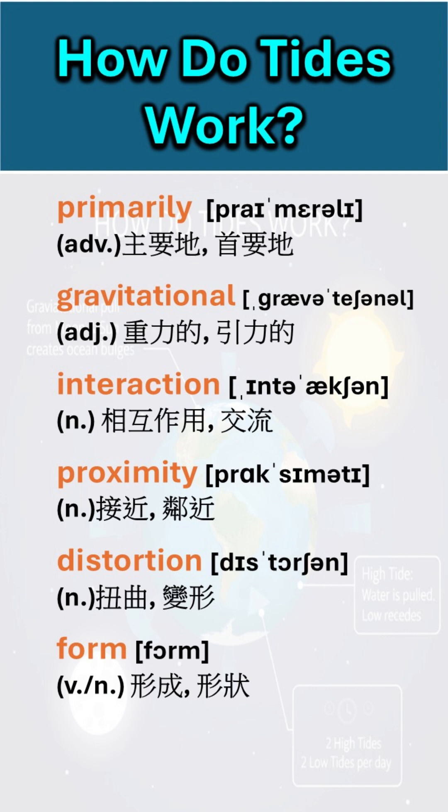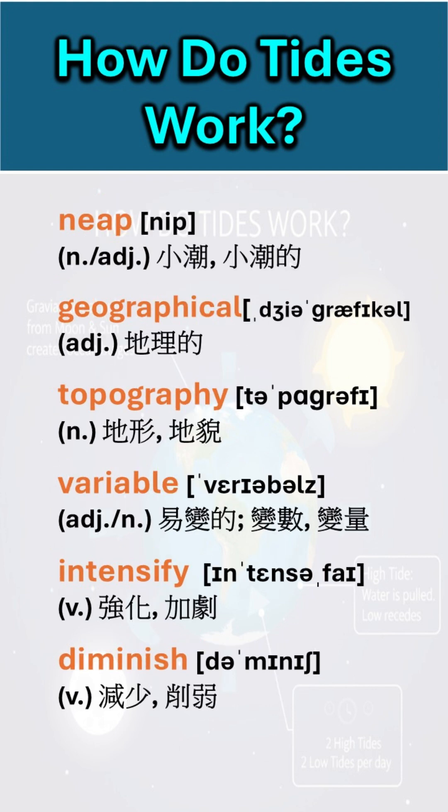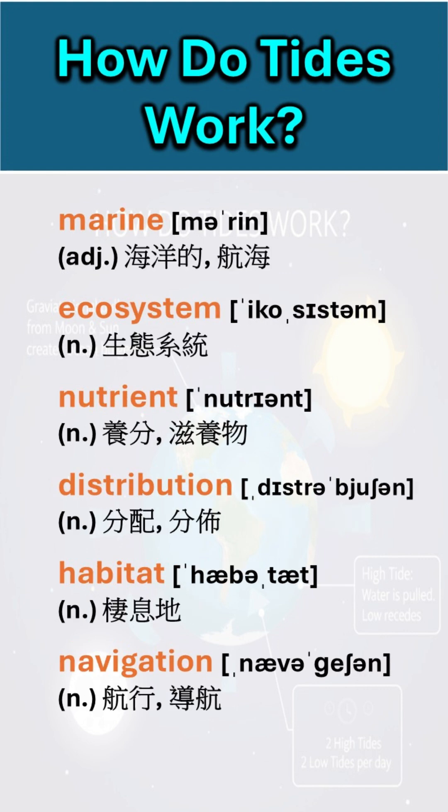Key vocabulary: primarily, gravitational, interaction, proximity, distortion, form, tidal bulge, predictable, align, amplify, moderate, neap, geographical, topography, variable, intensify, diminish, marine, ecosystem, nutrient, distribution, habitat, navigation.